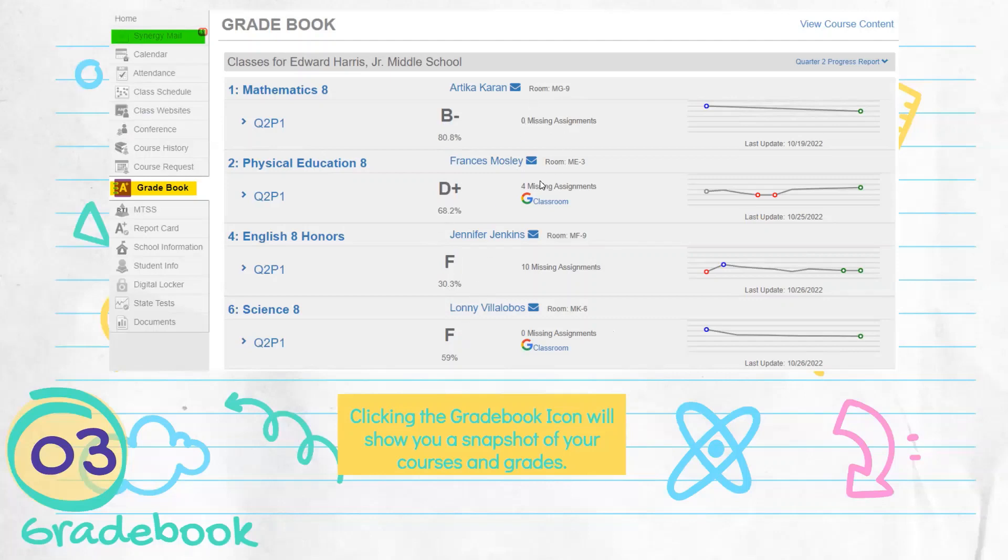And then it also shows if you have missing assignments. So no missing assignments for math, four for PE, ten for English, and zero for science.